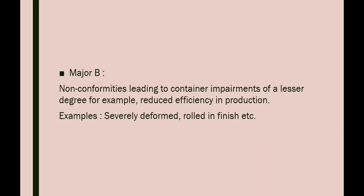The third category of defect is major B. Non-conformities leading to container impairments of a lesser degree are classified as major B. Examples for major B defects are severely deformed or rolled-in finish containers.